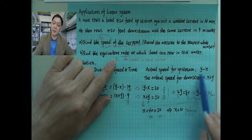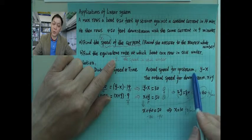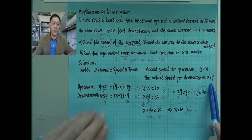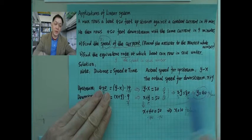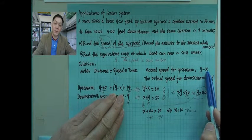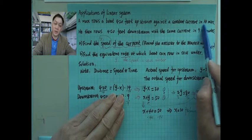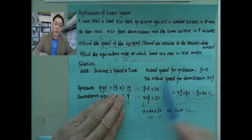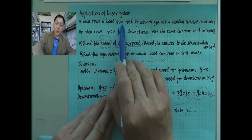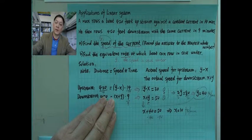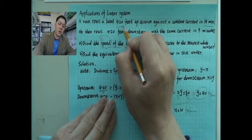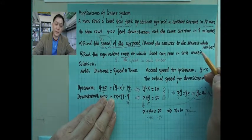Once we have the actual upstream and downstream speeds, things become straightforward. The actual upstream speed is y minus x, and this man rows for 14 minutes, covering 420 feet. So the equation is: (y minus x) times 14 equals 420.